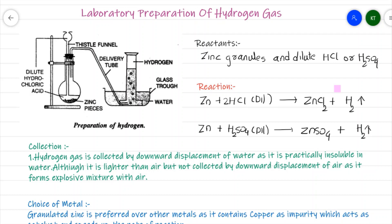The hydrogen gas passes through the delivery tube and is collected by downward displacement of water. Hydrogen gas is practically insoluble in water — that is the reason it is collected by downward displacement of water.